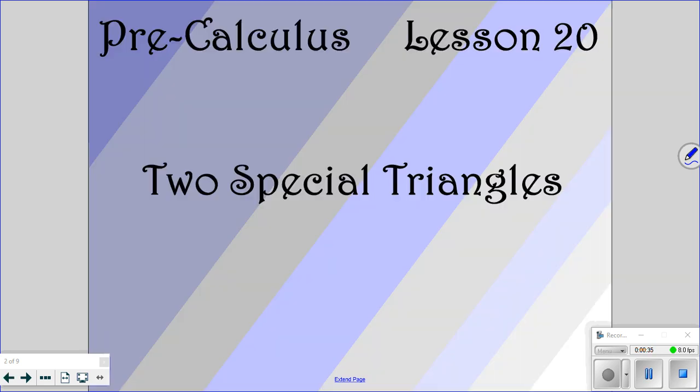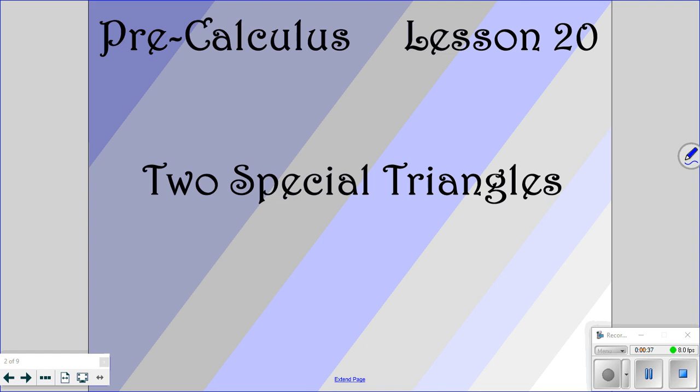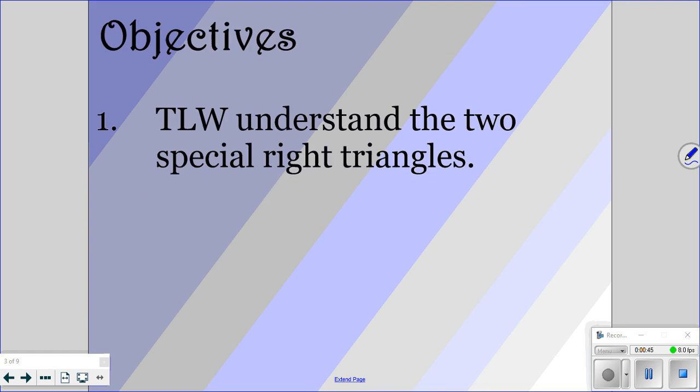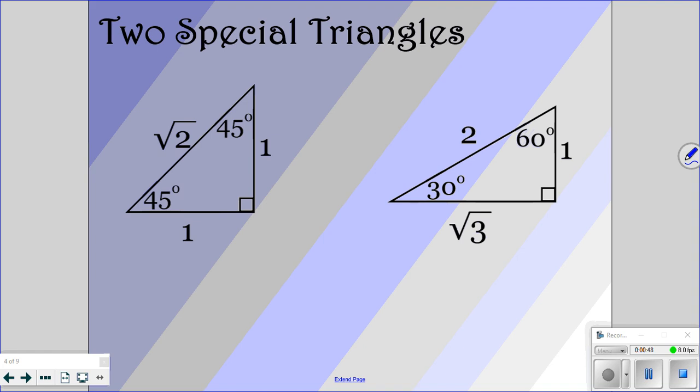Okay, so we are looking at lesson 20 today. We're going to look at two special triangles. You should be familiar with these already. The 45-45-90 triangle and the 30-60-90 triangle.